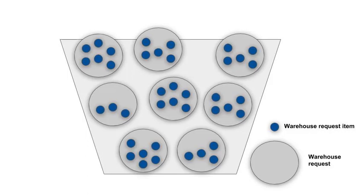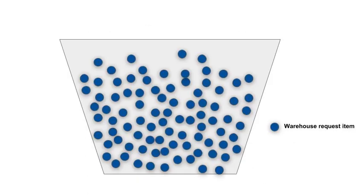To make it understandable, imagine a big box of big balls with each big ball containing a number of small balls. The box is our request buffer. The big balls are our warehouse requests and the small balls are the warehouse request items. From now onwards, we ignore the big balls as we, and EWM also, are only interested in the small ones, our warehouse request items.